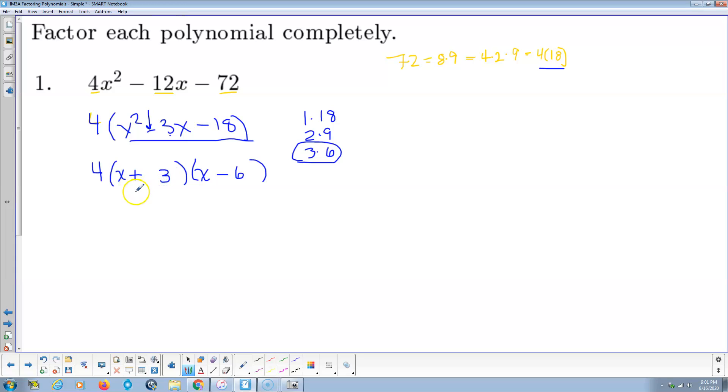My honors pre-cal kids miss a third of these on tests because they don't do the 5 second check. Multiply: 3 times negative 6 is negative 18. Add: 3 added to negative 6 is negative 3. Bam. How hard was that? Super easy. But kids will put down x minus 3 and x plus 6 all the time. It's crazy. Just takes a few seconds to check. Anyways, there's number 1.